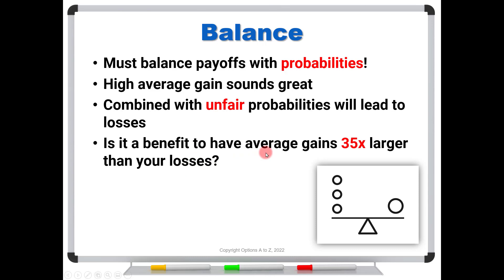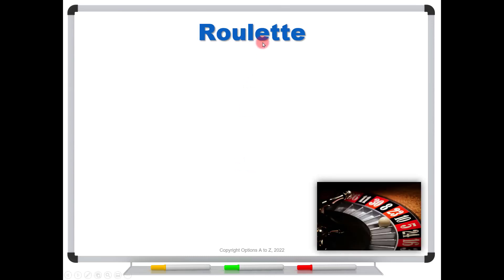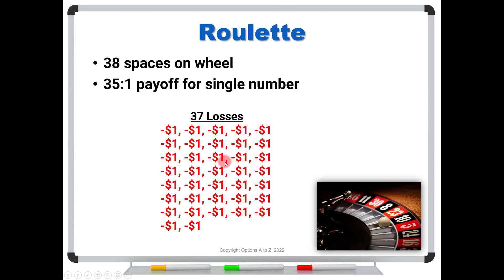So let's take a look. Is it a benefit to have your average gains 35 times larger than your losses? A lot of traders are going to say, of course it is. Well, let's take a look. Here's a real simple way to do it. Game of roulette. Walk into any casino. You're going to find 38 spaces on the wheel. And if you pick a single number to come up and you win, you'll find that the casino pays off at 35 to one. That means for every dollar you bet, you're going to win 35 dollars. So again, does this sound like a great deal? Well, let's take a look. If you played this game 38 times on average, what's going to happen is you would lose 37 times. You would have 37 losses of a buck. And then on your 38th try, again, on average, you would win and you would get this 35 dollar payoff.